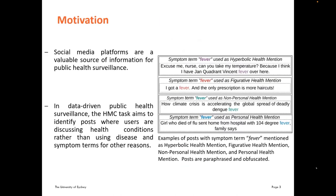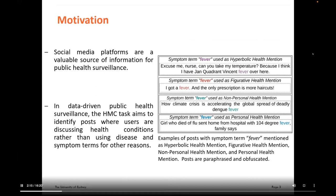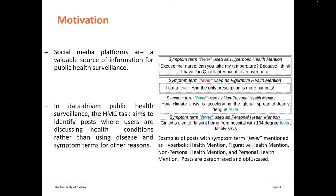Motivation: social media platforms are a valuable source of information for public health surveillance. In data-driven public health surveillance, the health mention classification task aims to identify posts where users are discussing health conditions rather than using disease or symptom terms for other reasons. In the examples shown, the first three use the symptom term 'fever' as a hyperbolic mention, figurative mention, and non-person health mention, while only the last post uses it to describe an actual health condition. Our task is to identify such non-health usages to improve the health mention classification task on social media.